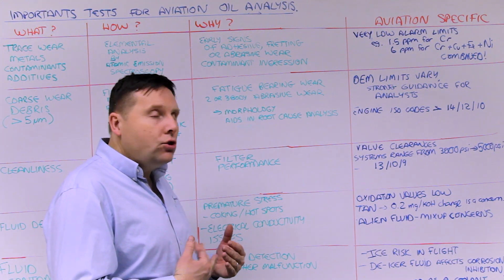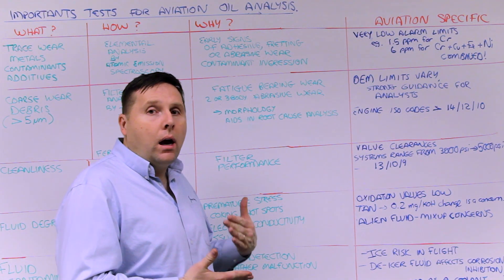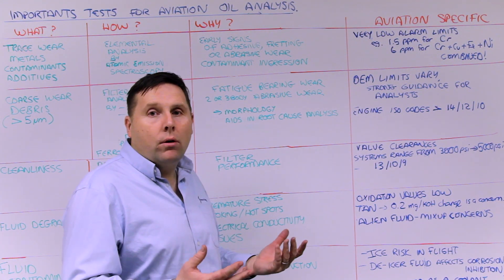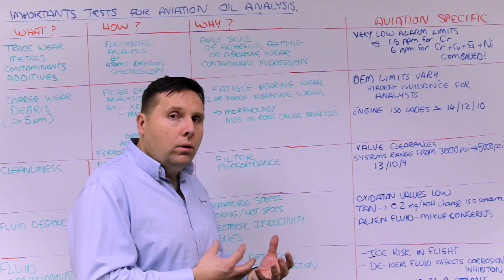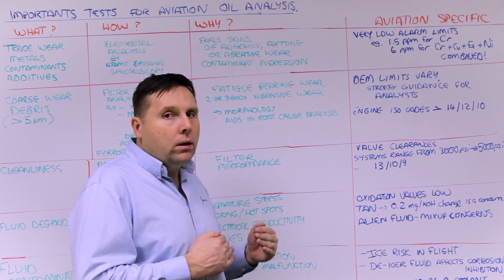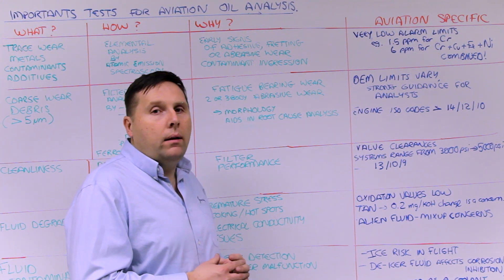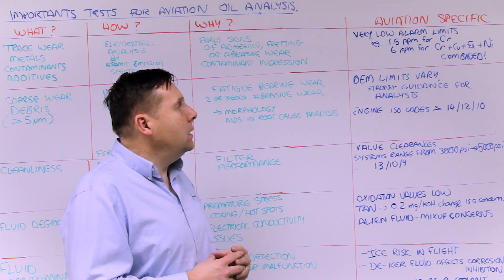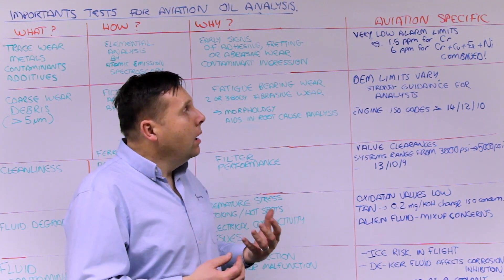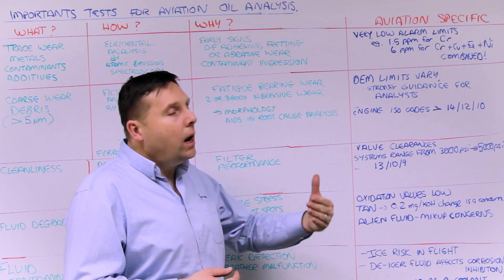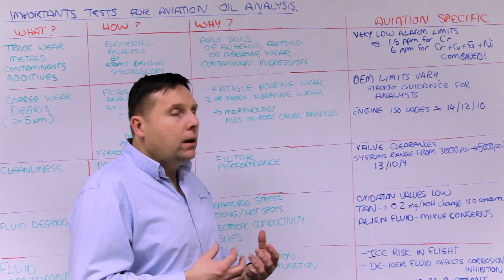What's unique to aviation is that the alarm limits are extremely low. For example, a condemnation limit of 1.5 ppm for chromium. It's a combination of the small fluid volumes and the concern about early warning signs — they want to see zero or near zero ideally. They'll often use a combined alarm system, such as six parts per million for a combination of chrome, copper, nickel, and iron combined, to ensure an extremely low threshold.